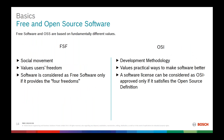In layman terms, the differences between FSF and OSI are: FSF is a social movement whereas OSI is a development methodology. FSF values users' freedom while OSI values practical ways to make software better. FSF is concerned with making the four freedoms available to every user, whereas OSI maintains licenses approved only if they satisfy the open source definition.